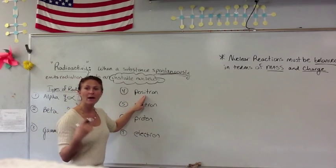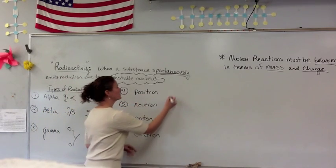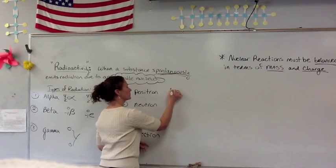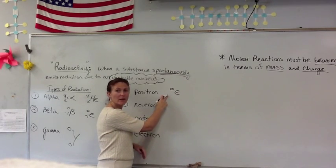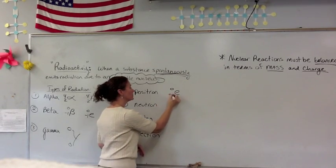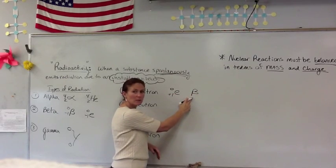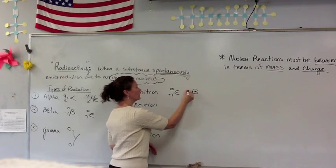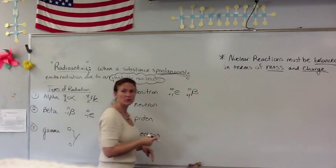A positron is the antimatter of an electron. It has no mass, but its charge is opposite that of an electron — it's a plus-one charge. It can also be symbolized as B with a plus-one charge.